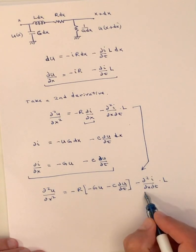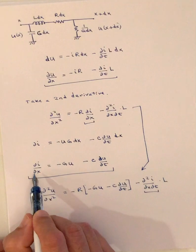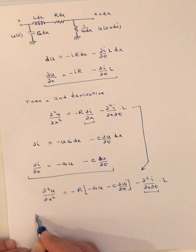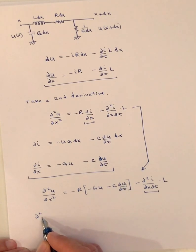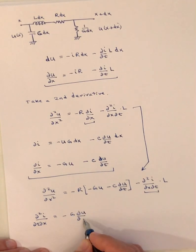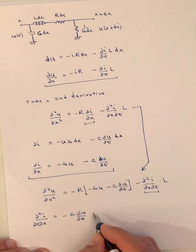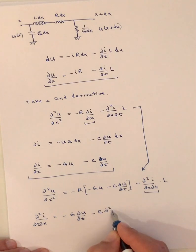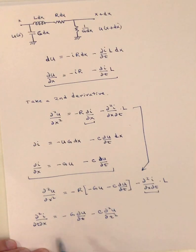We find this cross term by taking the second derivative of the current equation, this time applying a derivative with respect to time. We end up with D²I/DX·Dt equals minus G·(DU/Dt) minus C·(D²U/Dt²). We now have this cross term, which we can plug back into our equation.